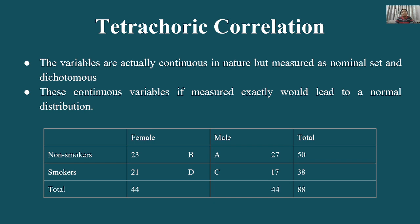The variables are actually continuous in nature but measured as nominal scale and dichotomous. Scales of measurement — nominal, ordinal, interval, ratio — ये चार scales होते हैं। Nominal मतलब बस नाम है, उसमें कोई rank या order नहीं पता। These continuous variables if measured exactly would lead to a normal distribution.